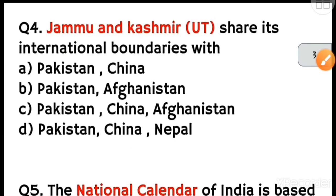Next question: Jammu and Kashmir UT shares its international boundaries with which countries? Option A is Pakistan and Afghanistan, B is Pakistan and Afghanistan, C is Pakistan and China, and D is Pakistan, China and Nepal. When Jammu Kashmir was a state, it shared international boundaries with Pakistan and Afghanistan. Now that Ladakh — which shared the border with China — has become a separate UT, China no longer shares international boundaries with J&K UT. So option A, Pakistan and Afghanistan, is correct.